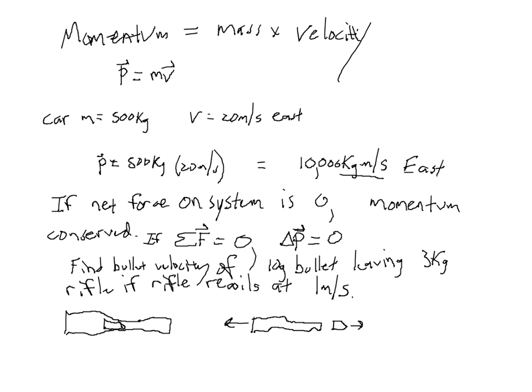What's the net force on this system — the rifle-bullet system? If you consider the whole thing, the rifle and the bullet together, then even when the bullet is being shot, the net force on that system is equal to zero. Because the rifle exerts a force on the bullet, but the bullet exerts an equal and opposite force on the rifle, according to Newton's third law, meaning those two forces cancel each other out.